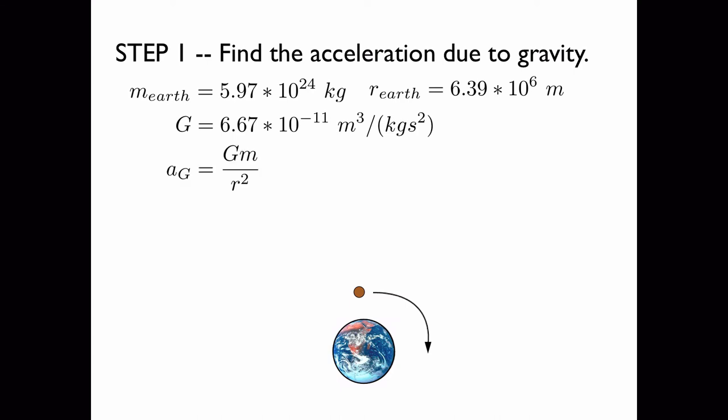The formula for the acceleration due to gravity at a distance r from a gravitating object is Gm over r squared. And r here is two times the radius of the Earth because it was specified that the asteroid is located two Earth radii from the center of the Earth.